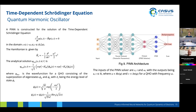Now we show some results for the time-dependent Schrödinger equation. We use the time-dependent Schrödinger equation with a harmonic potential as defined in the Hamiltonian. The domain is fixed from -π to π in space and 0 to 2π in time. We look at the superposition of two eigenstates, and we already have an analytical solution for this system.